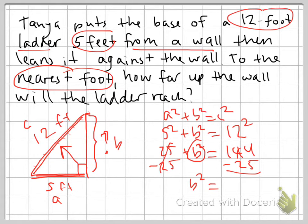If I subtract 25 from 144, that's 119. So I know B squared equals 119, I need to get B by itself, I undo the squaring by square rooting, so I get the square root of 119.